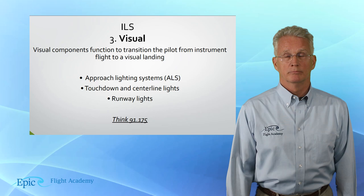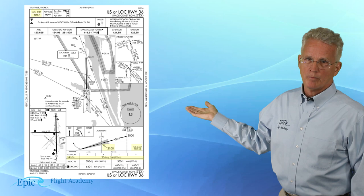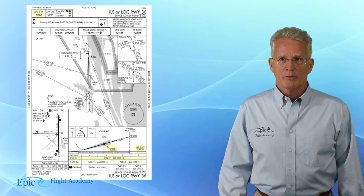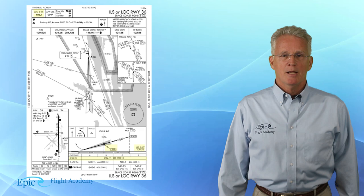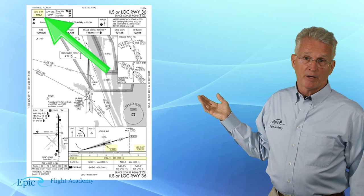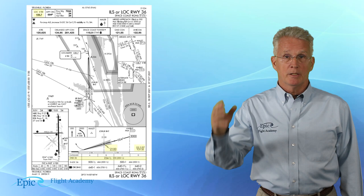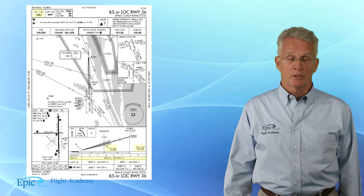Now let's put it all together and take a look at this sample chart. In this course we are using a sample approach plate from the Space Coast Regional Airport, which is in Titusville, Florida — just a little bit south of beautiful New Smyrna Beach. You can see that the localizer can be identified in the same way you would identify a VOR: you'll tune it in and listen over your headset to its Morse code signal. Review this, of course, with your flight instructor.